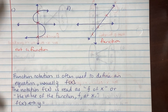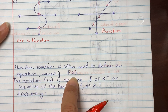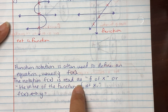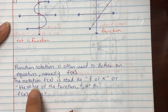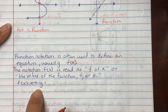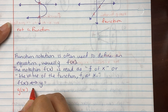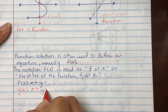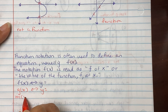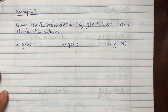Function notation is often used to define an equation, usually f of x. The notation f(x) is read as 'f of x' or 'the value of the function f at x.' f(x) is the same thing as saying y. Similarly, g(x) and m(x) are also equivalent to y when we go to graph.